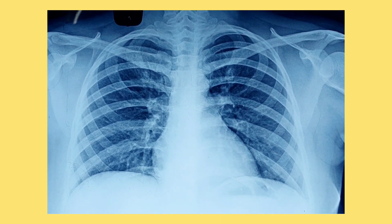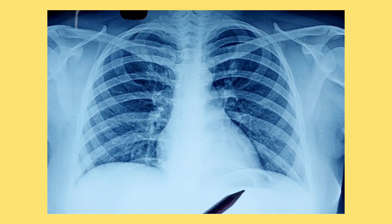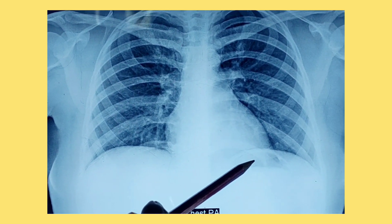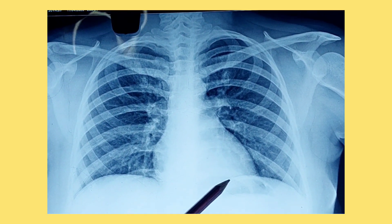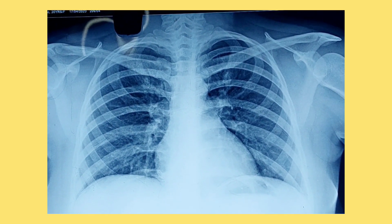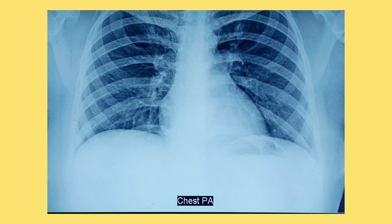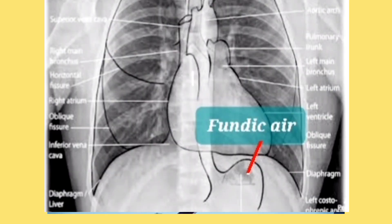Another thing that may be asked: can you see this black area? It is not prominent in this x-ray, but in some x-rays you will see that a particular area below the diaphragm looks black or dark. This dark or black area means air is present — this is the fundic air, which is air collected within the fundus of the stomach.